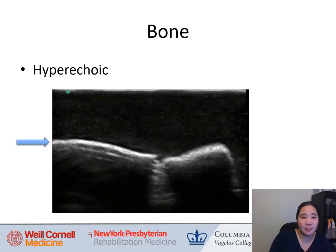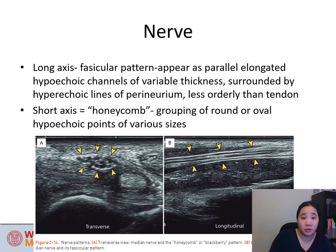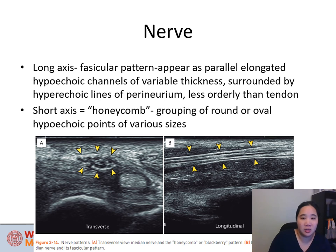Bone is described as hyperechoic — it appears bright white on screen. Nerve in long axis has a fascicular pattern, appearing as parallel elongated hypoechoic channels of variable thickness surrounded by hyperechoic lines of the perineurium, and is less orderly than tendon. In short axis, nerve is described as honeycomb — a grouping of round or oval hypoechoic points of various sizes.